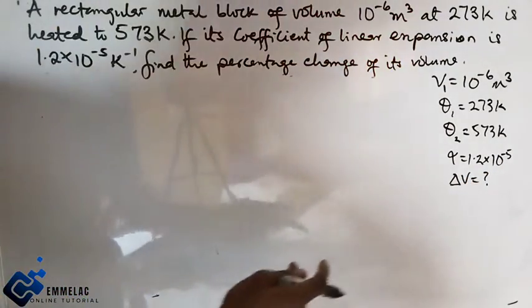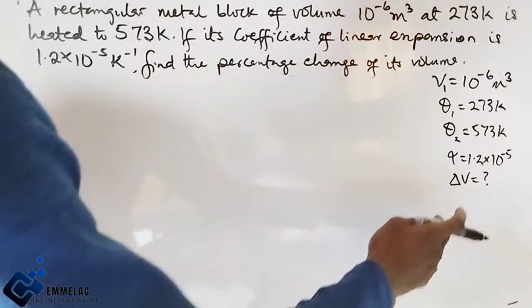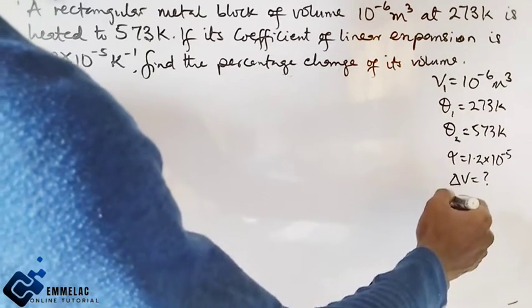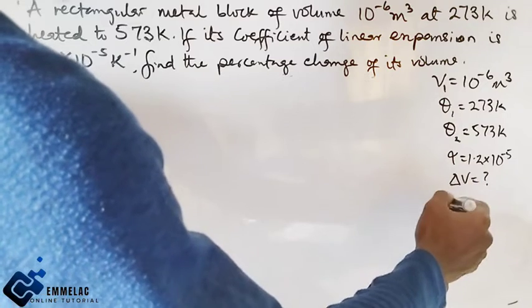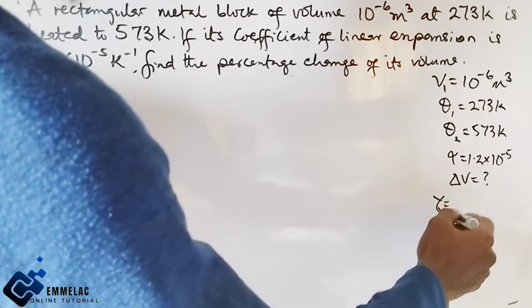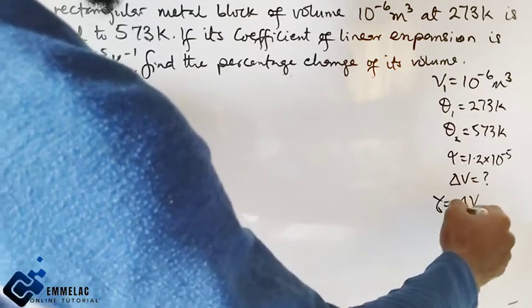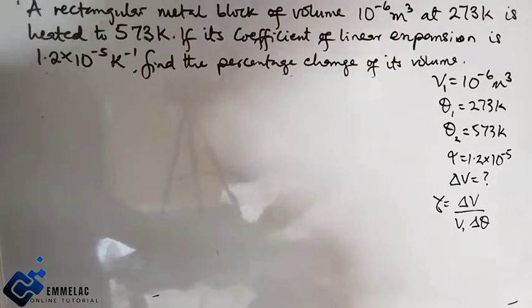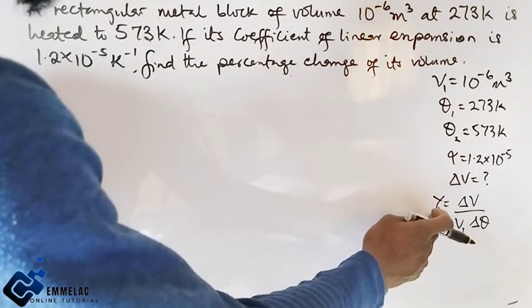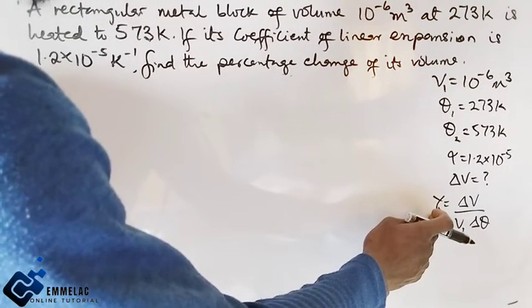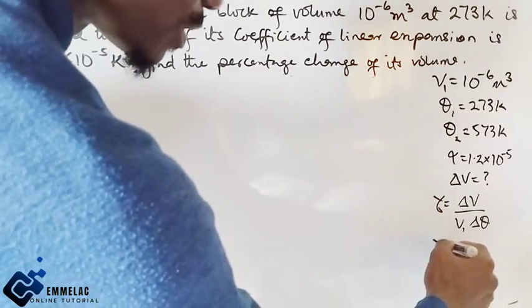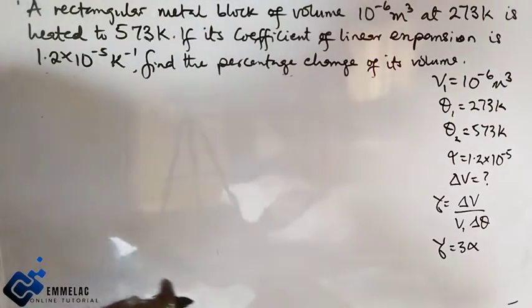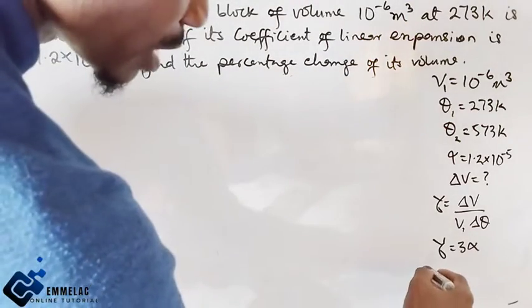There is a formula to find the change in volume, which is: cubic expansivity γ = ΔV/(V × ΔT). Now, unfortunately we are not given the cubic expansivity, but we know that cubic expansivity equals three times the linear expansivity.